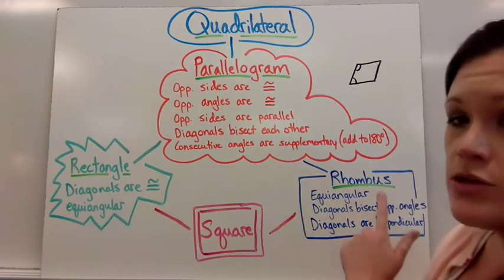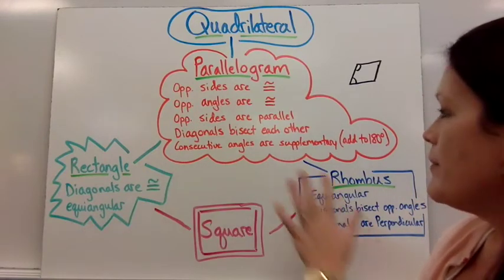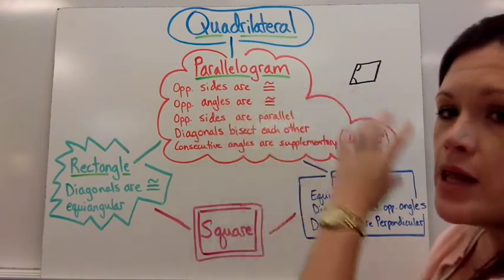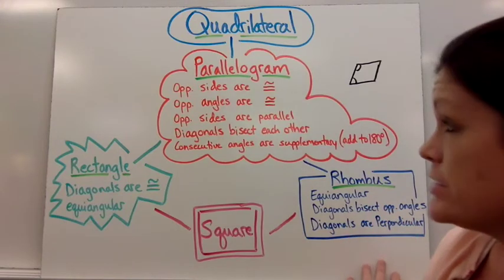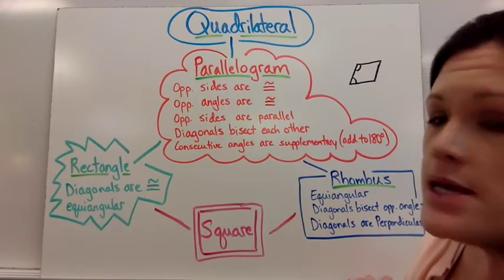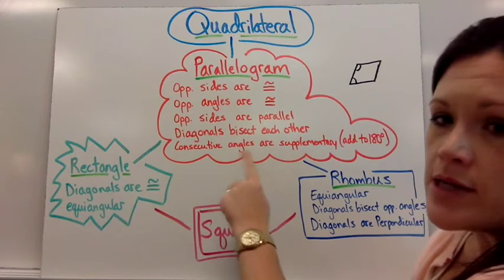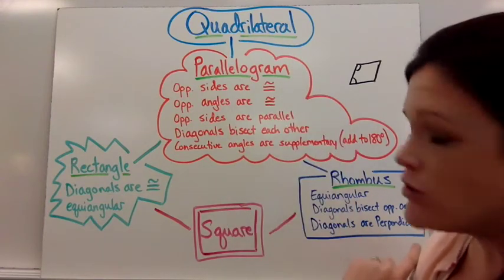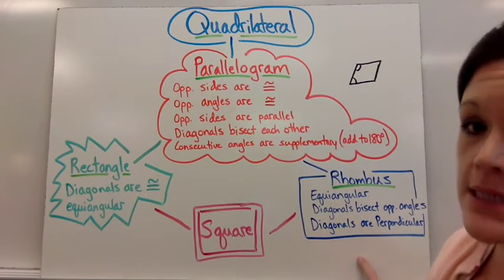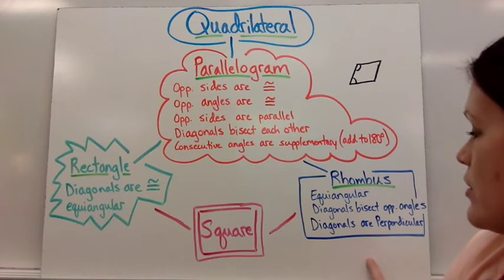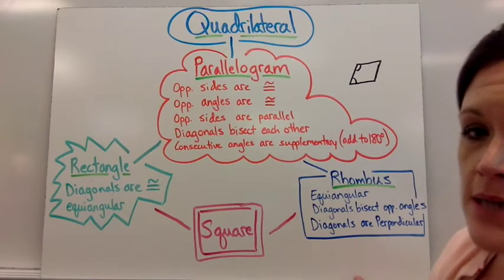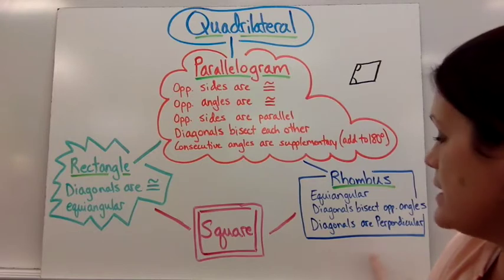And if they tell you it's a rhombus, that's different than a rectangle. But it's a parallelogram plus it has these other characteristics. So if they tell you it's a rhombus, it has all the qualities of a parallelogram. It's certainly a quadrilateral. But it also has these characteristics. So it's equilateral. The diagonals bisect opposite angles. And the diagonals are perpendicular.